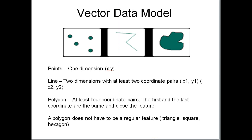The data we have been using has been a type called a vector data model. In ArcGIS, vectors are points, lines, or polygons. Points represent one dimension — always an XY value. The latitude is Y and the longitude is X.